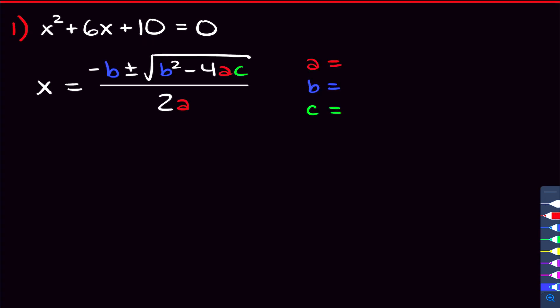To use the quadratic formula, we need to know what a, b, and c are — those are just our coefficients. So a is the number on x squared, so that's going to be 1 here. You can picture this as being 1 times x squared. B is the number on x, so that's going to be 6.